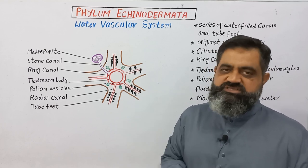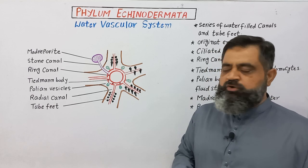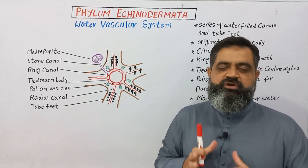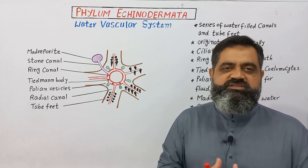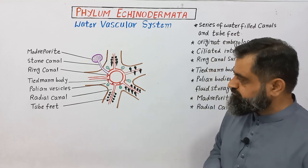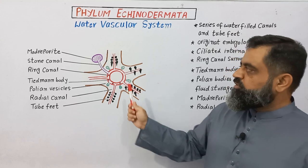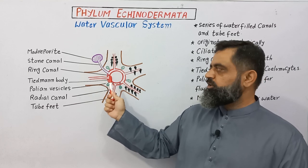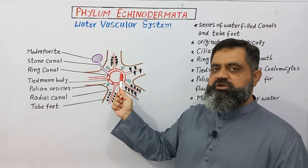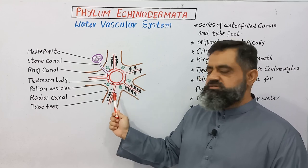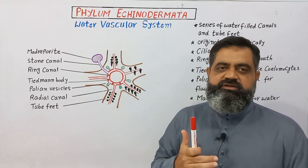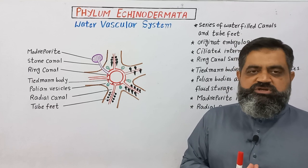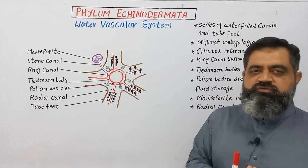The radial canals extend throughout the length of each arm of the sea star, and these radial canals open into small structures known as tube feet, which are used for the locomotion of the sea star — which we will discuss in upcoming lectures. So to summarize: water enters from the madreporite, through the stone canal, into the ring canal, from the ring canal into the radial canals, and from the radial canals into the tube feet. This is the water vascular system of the sea star.